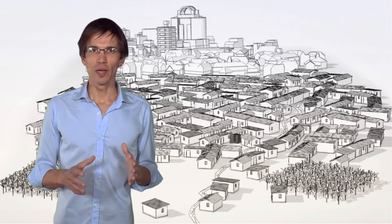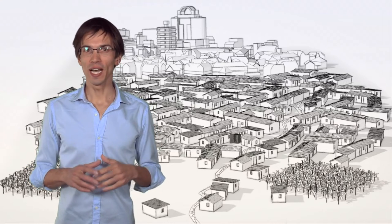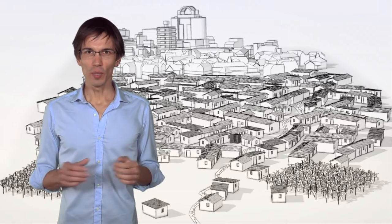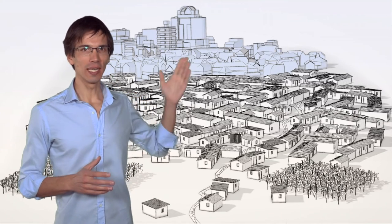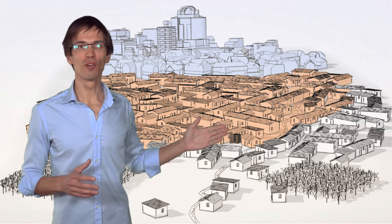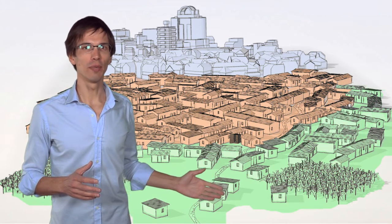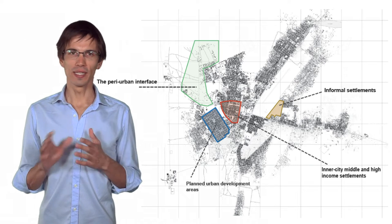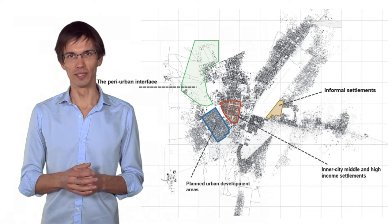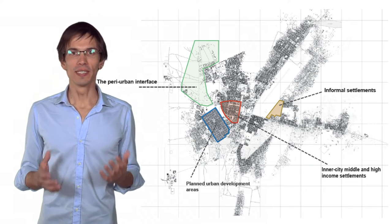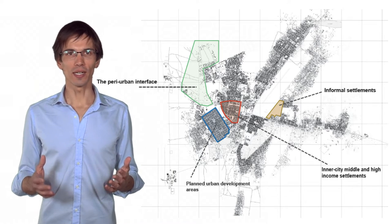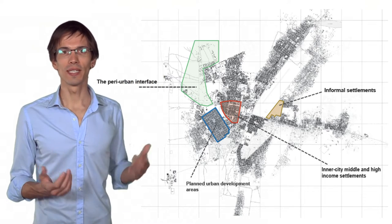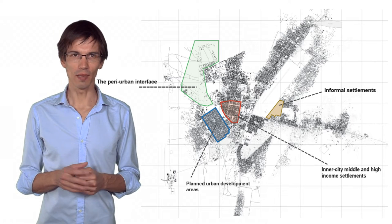Cities in low- and middle-income countries are often highly heterogeneous. Roughly, we can distinguish between middle- and high-income settlements, informal settlements and the peri-urban interface. We can add to these three categories the newly planned urban areas. Sometimes these different contexts are clearly separated in large neighborhoods, but sometimes they are also more scattered, like slum pockets.